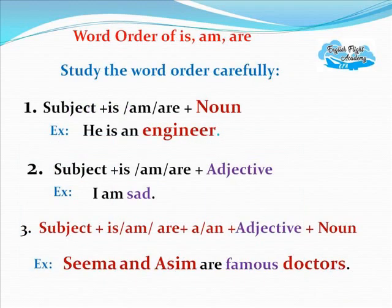Look at the screen — study the word order of is/am/are very carefully. Word order 1: Subject + is/am/are + noun. Example: He is an engineer. Word order 2: Subject + is/am/are + adjective. Example: I am sad, he is sad, they are sad. Word order 3: Subject + is/am/are + a/an + adjective + noun. Example: Seema and Asima are famous doctors. Study these word orders carefully and practice them thoroughly.